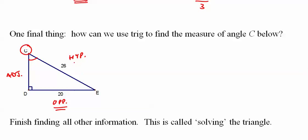So we look at it. We know the opposite, we know the hypotenuse. That means sine of C is opposite over hypotenuse, which is 20 over 26.